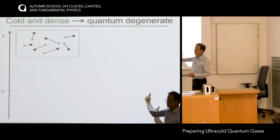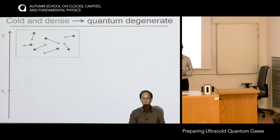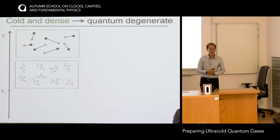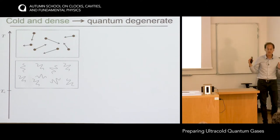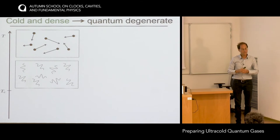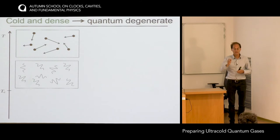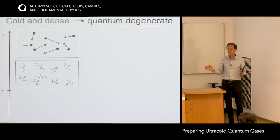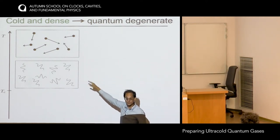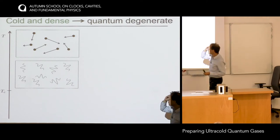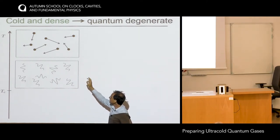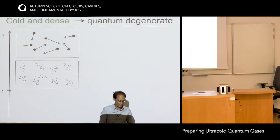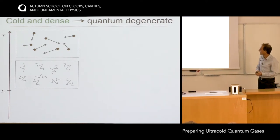Let's take a gas of atoms at room temperature. These particles move around with hundreds of meters per second and are classical. When we cool them down, the velocity goes down — we know the velocity better and better, closer and closer to zero. Now think of Heisenberg's uncertainty relation: if you know the velocity very well, you don't know the position. So we shouldn't think about atoms as classical particles anymore — we need to use wave functions that describe probability distributions for position and momentum.